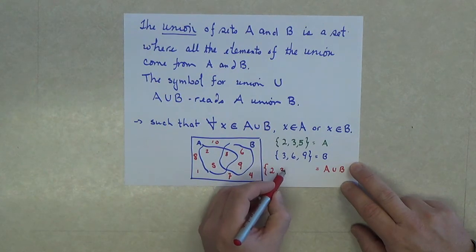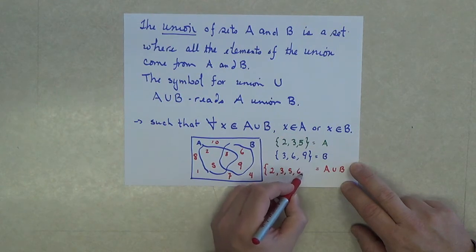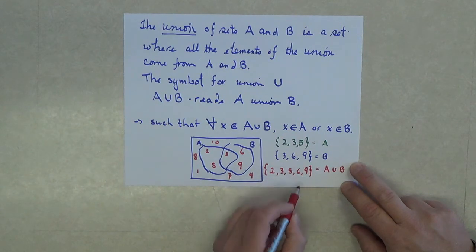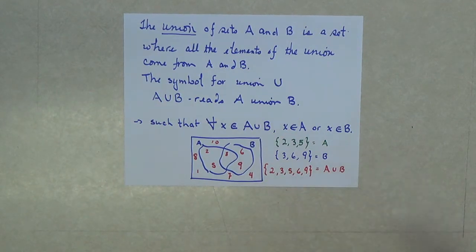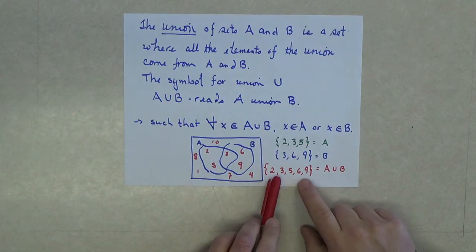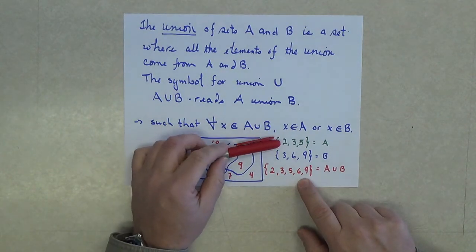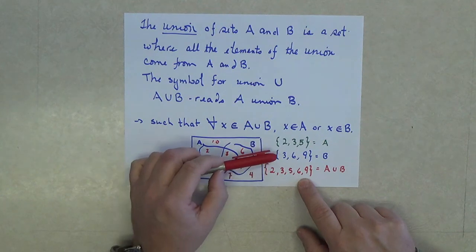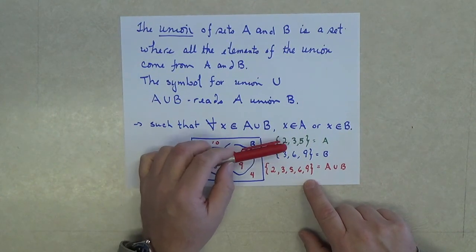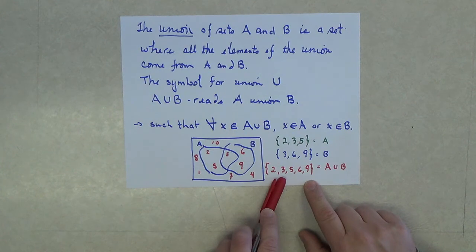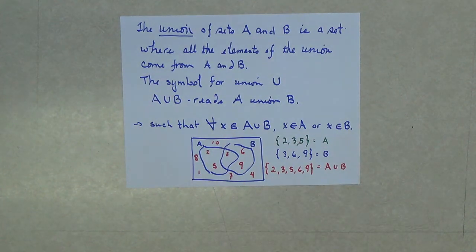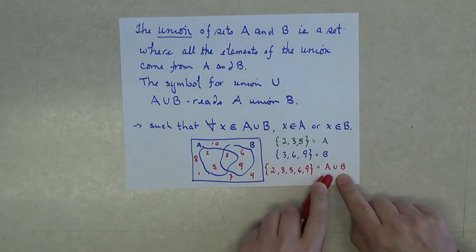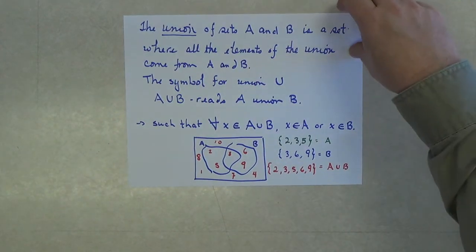I can combine these two sets: 2, 3, 5, 6, and 9 are the elements that belong to the union. Because all of these elements belong to either A or they belong to set B. In one case, the example of the element 3, it actually belonged to both sets. That's fine, it's still a member of the union.